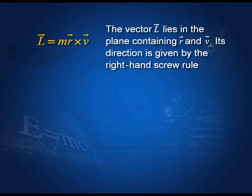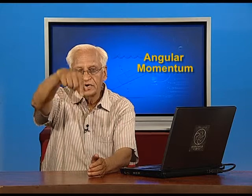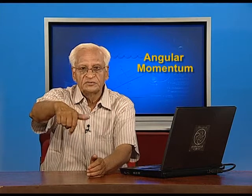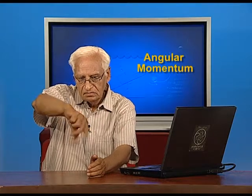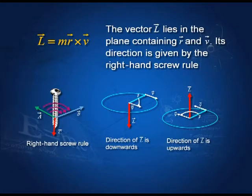Angular momentum is m(r × v), so you must be familiar with the cross product. To find the direction of the angular momentum, we use what is known as the right-hand screw rule. If you take a right-hand screw and turn it clockwise, it goes down; if you turn it the other way, it comes up. We use this right-hand screw rule to find the direction of the cross product of vectors.